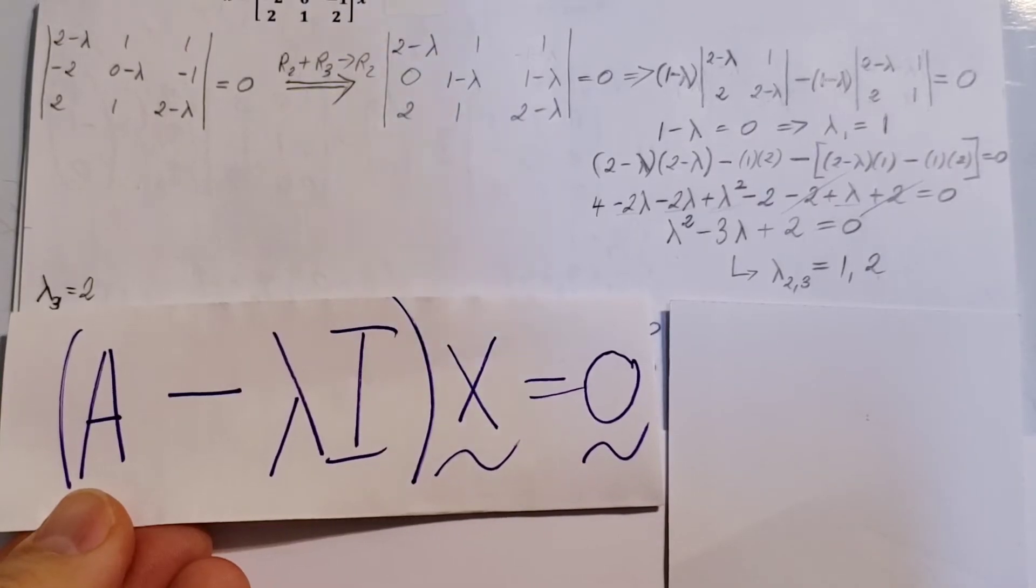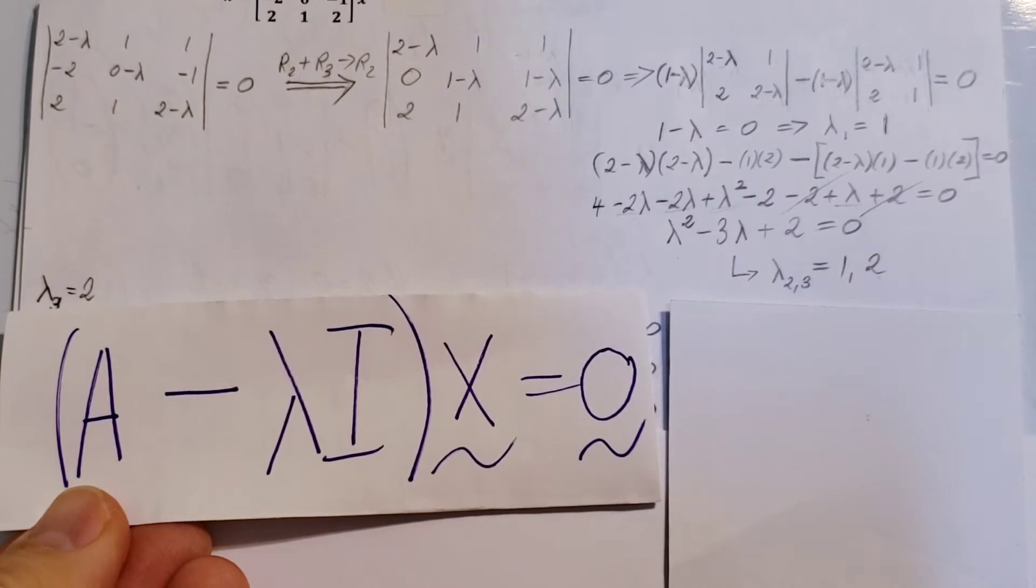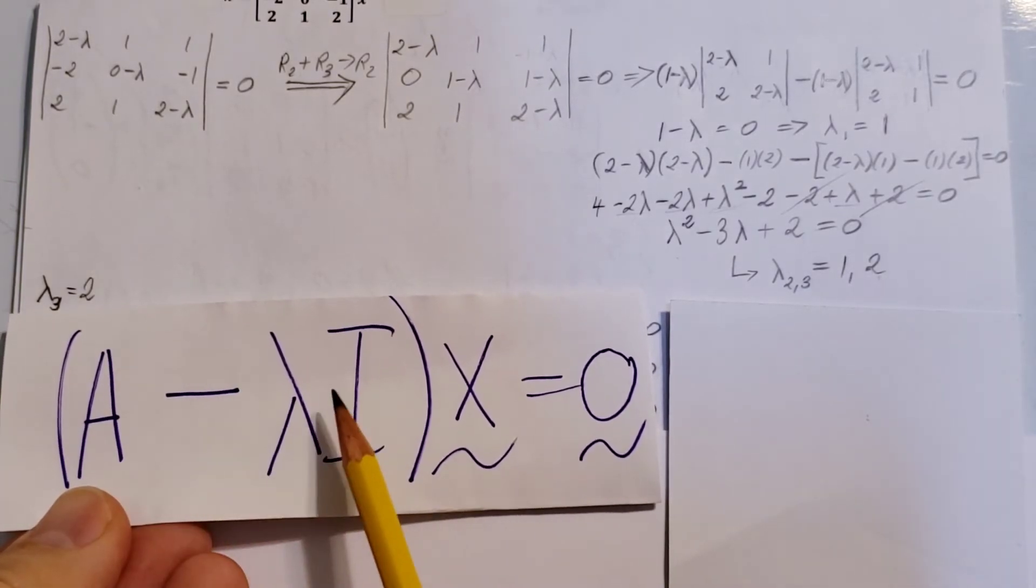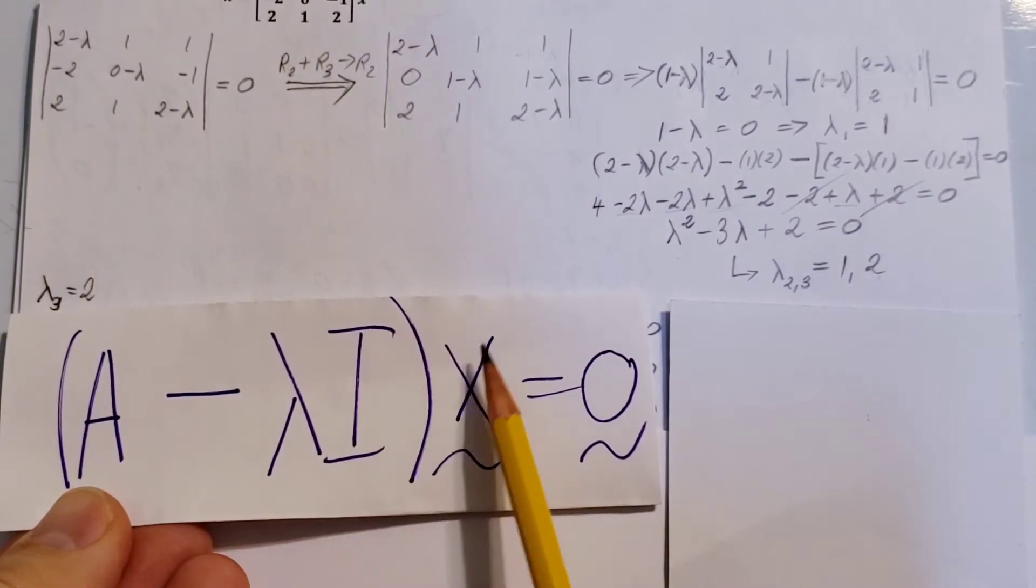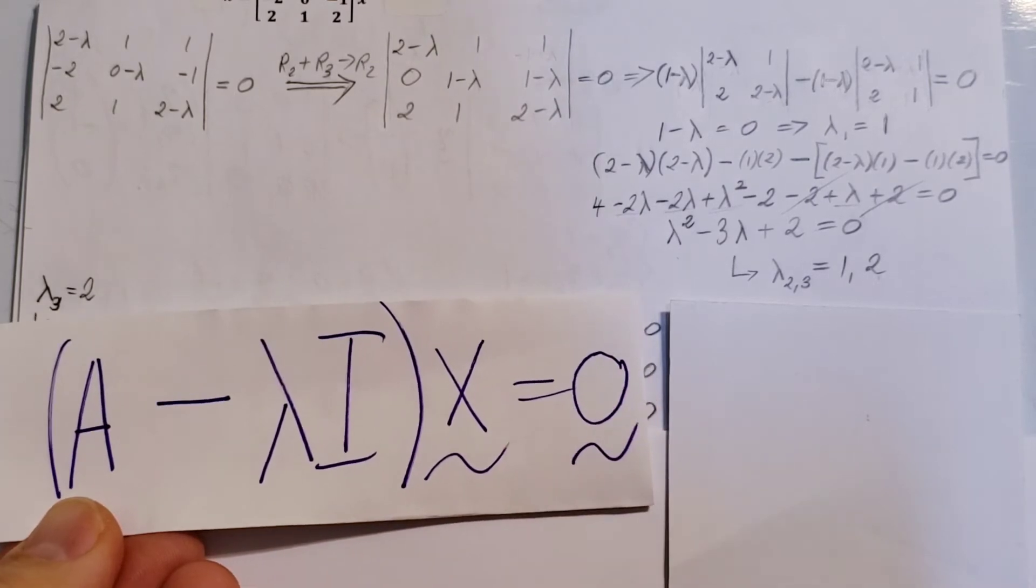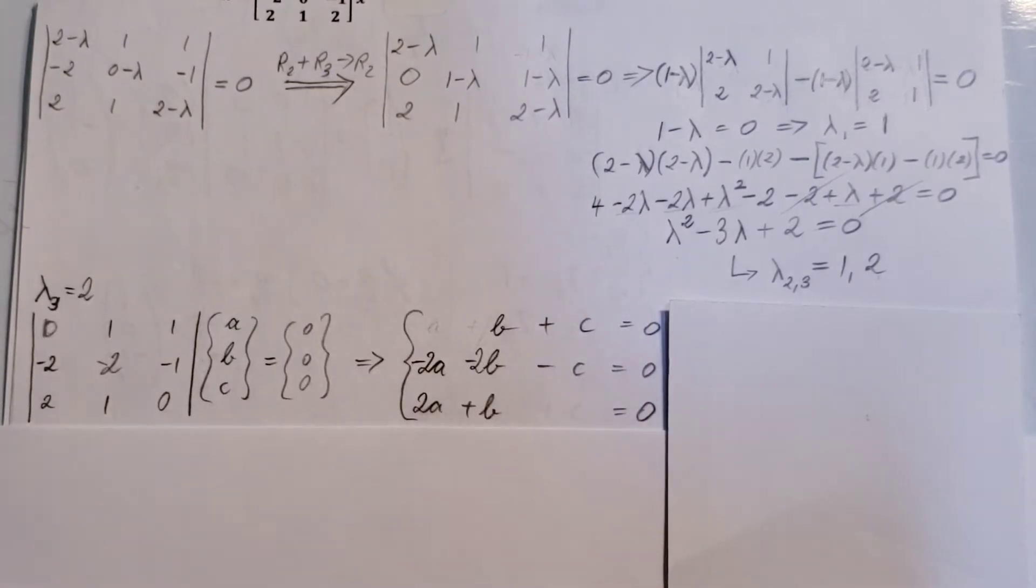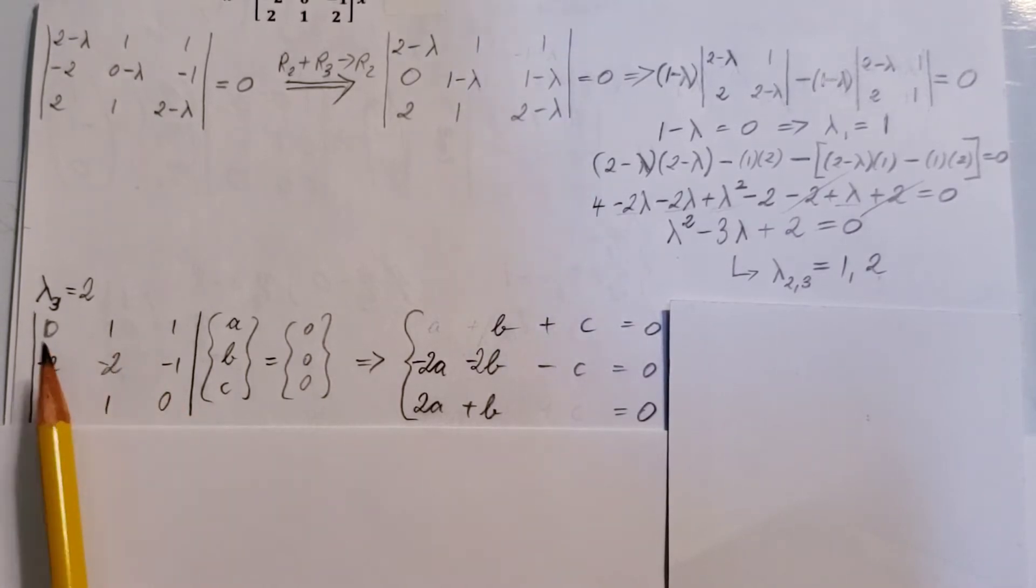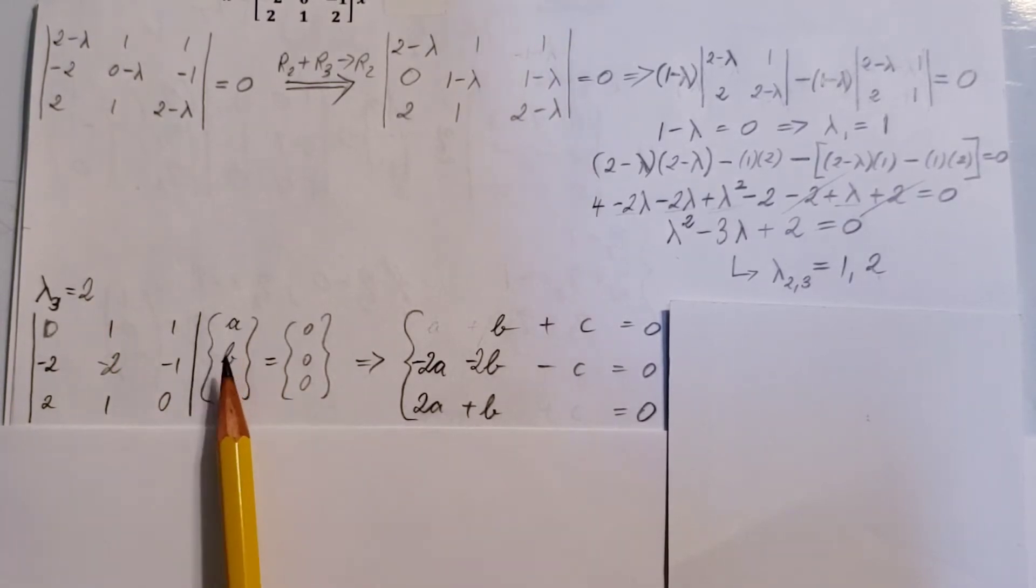Here's the formula that we need to find our eigenvector. A minus lambda I times x vector equals 0 vector. That's what we can see right here. Our A vector plugged in with lambda subtracted on the diagonal. And my lambda is 2. My x vector is, I'm gonna call its components a, b, and c, and equal to the 0 vector.